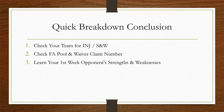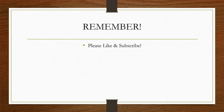Here's a quick breakdown conclusion for your draft aftermath. First, check your team for injuries so you can put them on IR and check out the free agent pool — and check your strengths and weaknesses. Second, check the free agent pool and your waiver claim number so you know whether there's value in using it or not. Third and last, learn your first week opponent's strengths and weaknesses so you can better prepare your team. Please like this video if you found it helpful and informative, and subscribe to my channel as I'll be dropping fantasy basketball content all year round. Remember, the in-depth analysis on how to gauge your category teams video will be out tomorrow — keep an eye out for it.